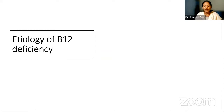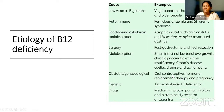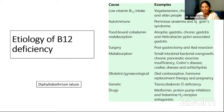Etiology of vitamin B12 deficiency includes: low intake, especially in vegetarians; autoimmune gastritis (pernicious anemia) and H. pylori infection affecting the stomach; gastrectomy and ileal resection; malabsorption syndromes affecting the small bowel; obstetric causes such as oral contraceptive use, hormone replacement therapy, and pregnancy where demand is high; genetic deficiency of transcobalamin 2 (the plasma carrier of B12); drugs; and Diphyllobothrium latum (fish tapeworm) competing for dietary B12.